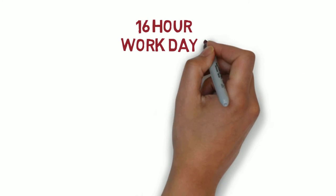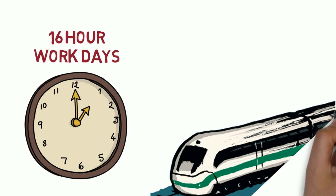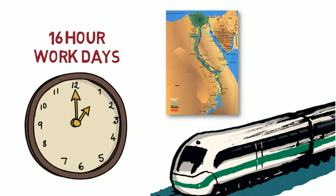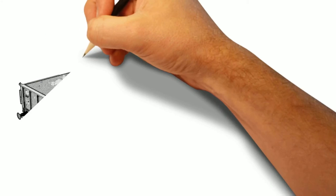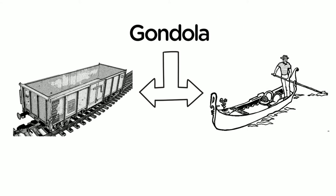Next involved 16-hour days for the next three weeks building a prototype system for a contract bid to control the Egyptian National Railroad. Brian was my right-hand man in a group of 30 engineers. Yes, and the only other person in the company that knew a gondola was not just a boat in the canals of Venice.